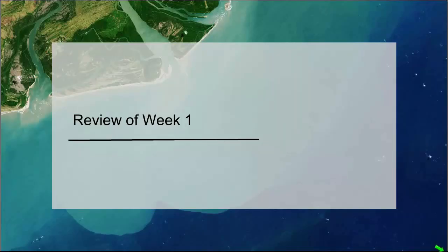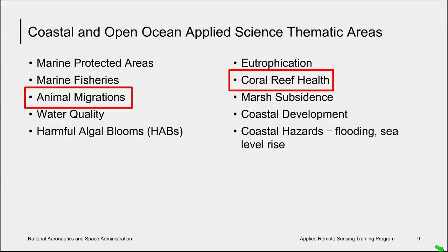First, a review of some important concepts from last week. We have identified 10 thematic areas for coastal and open ocean applied science: marine protected areas, marine fisheries, animal migrations, water quality, harmful algal blooms or HABs, eutrophication, coral reef health, marsh subsidence, coastal development, and coastal hazards.